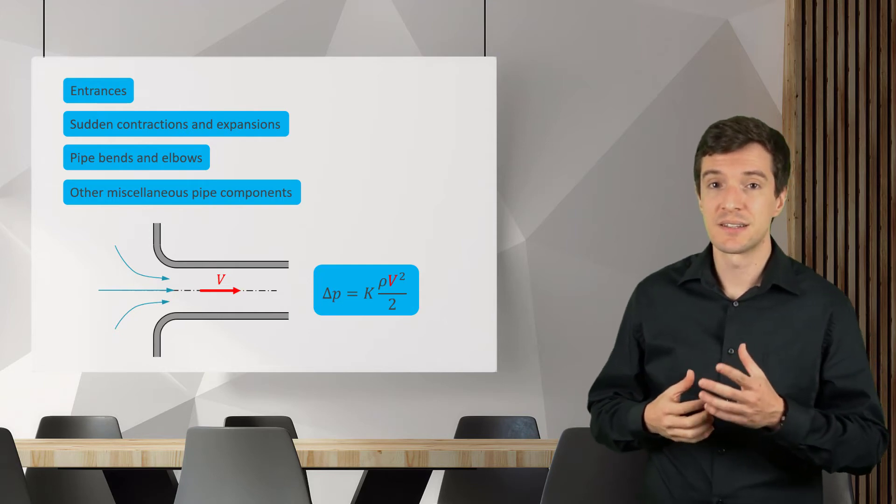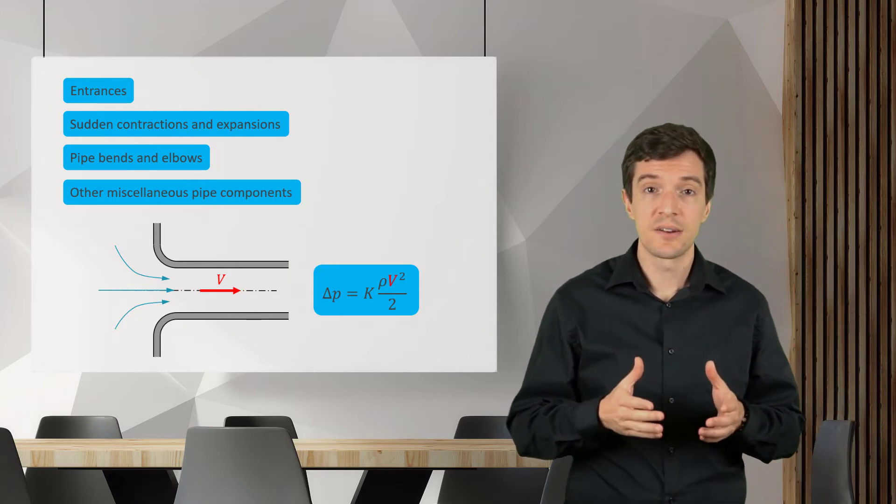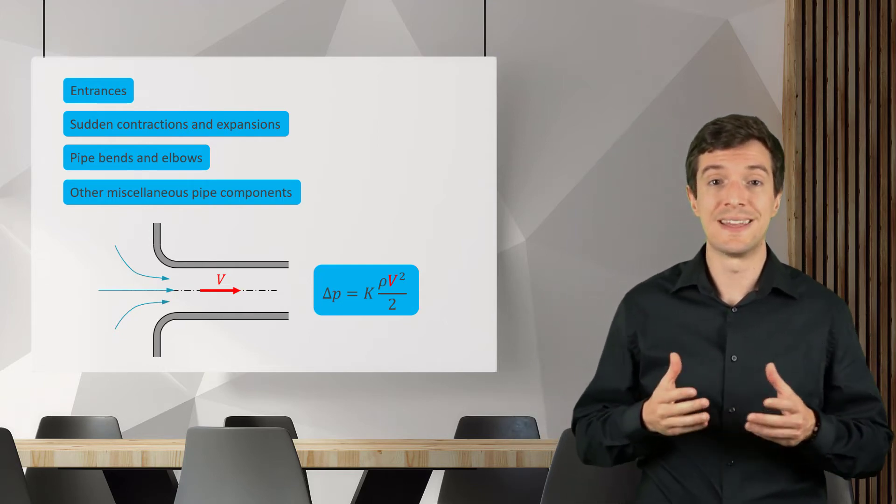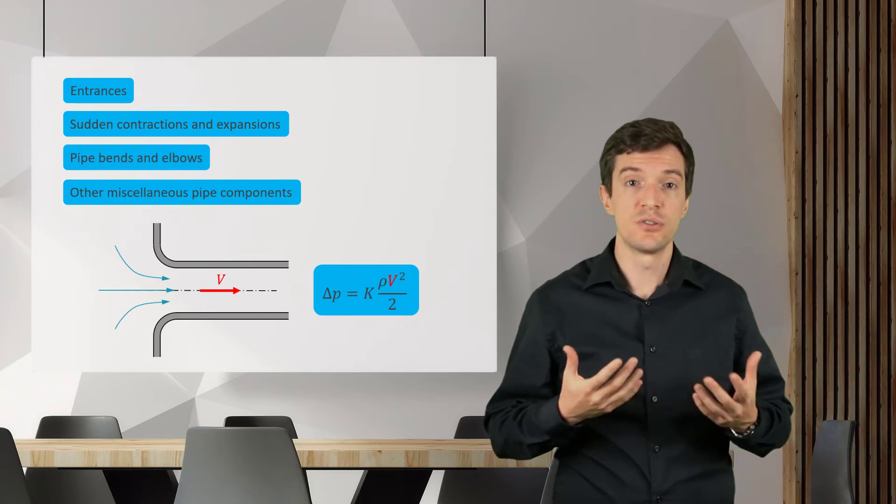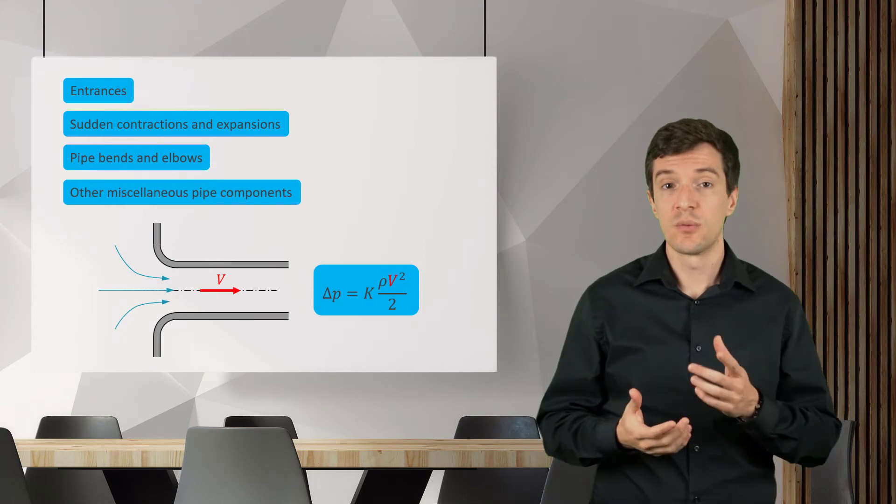In the next examples, the red arrow with a red V will indicate the location where the reference velocity should be estimated for the component analyzed.